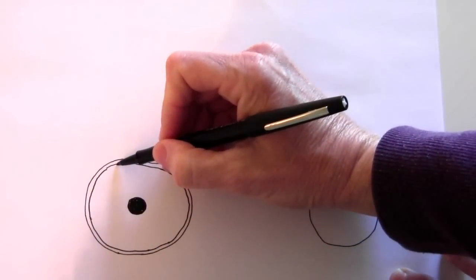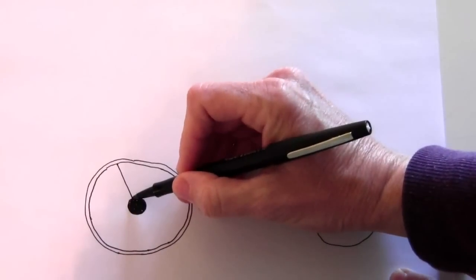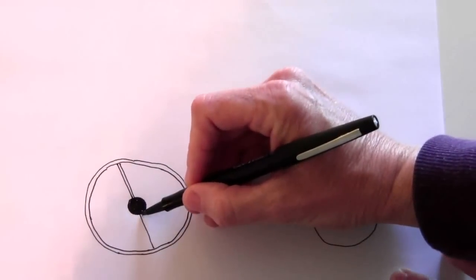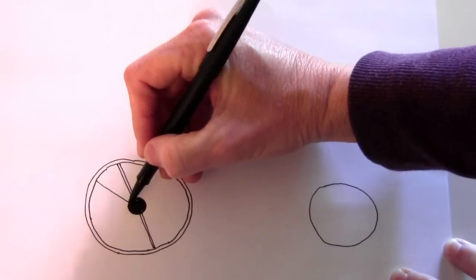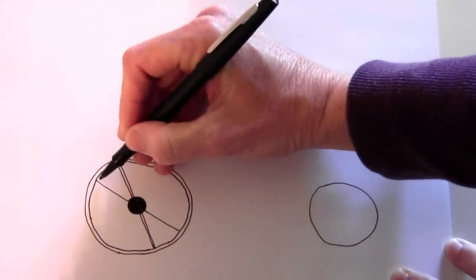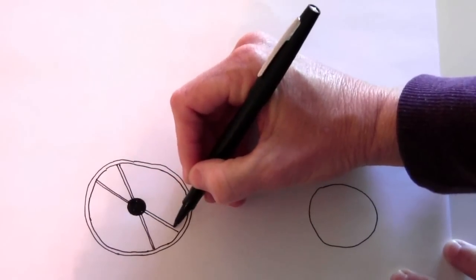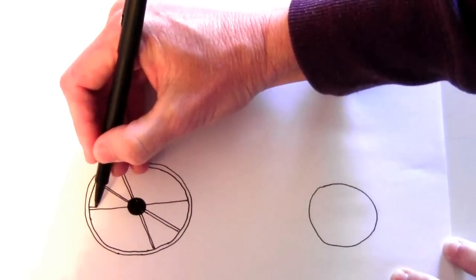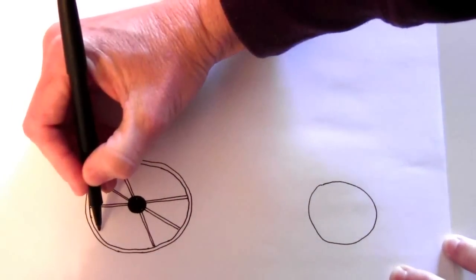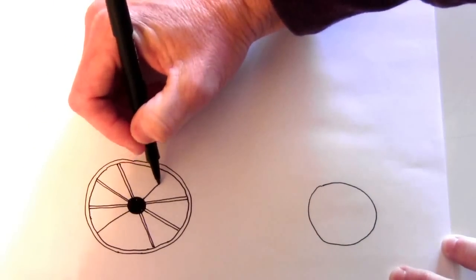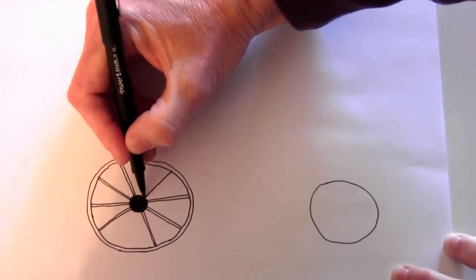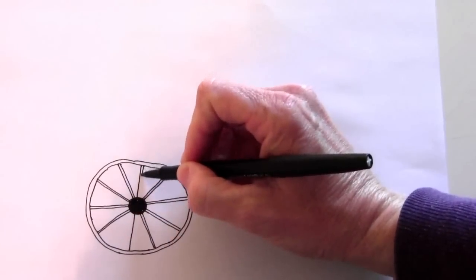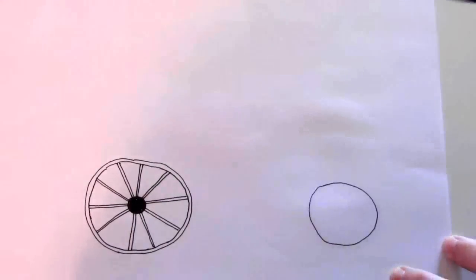And then to make the spokes, you're just going to draw a line. You can either draw it all the way through or you can lift your pen up if you want. And you keep going around the wheel while doing the same thing. Try to evenly space them. Okay, there's one wheel.